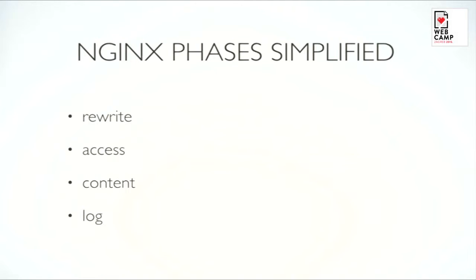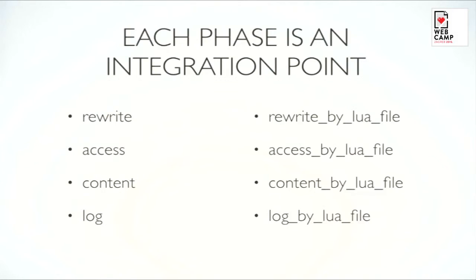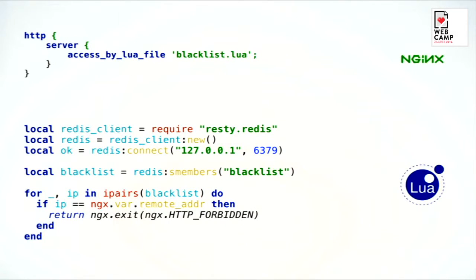If we simplify the Nginx phases — as a request goes through each phase, for each phase we have an integration point where we can put Lua into action. For example, in the access phase, you can use 'access_by_lua' or 'access_by_lua_file' and hand it off to Lua to do something. So in Nginx configuration you say: in the access phase, please take a look at this Lua file and do what it does.